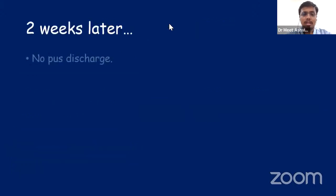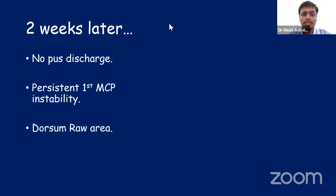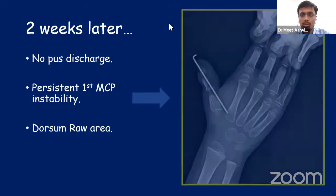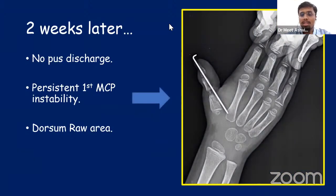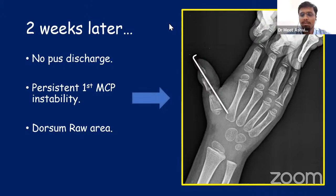Two weeks later, there was no pus discharge. However, there was persistent first MCP joint instability and the dorsum raw area showed good granulation tissue. We transfixed the unstable first MCP joint with a K-wire and the dorsum raw area was covered with a split-thickness skin graft.